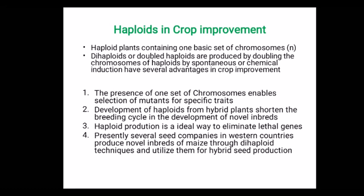Haploid plants contain one basic set of chromosomes, that is n number instead of 2n number. Dihaploid or doubled haploid are produced by doubling the chromosome numbers of haploid. The doubling can be produced by two methods: either it spontaneously occurs or by chemical induction, such as treating with chemicals like colchicine.